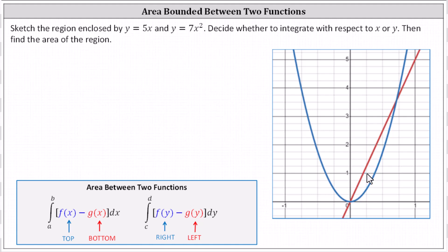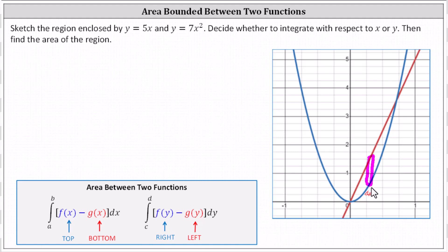If we sketch a representative rectangle of the bounded area, notice the thickness of the rectangle is delta x, which is why we integrate with respect to x. The height of the rectangle is going to be the function value of the top function minus the function value of the bottom function, which is why the integrand function is f of x minus g of x.